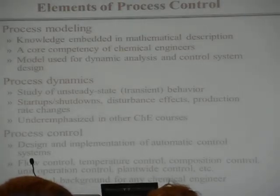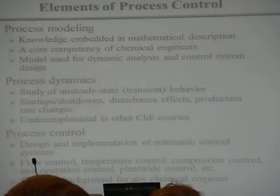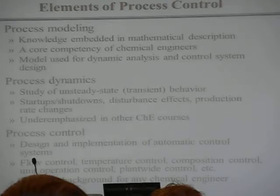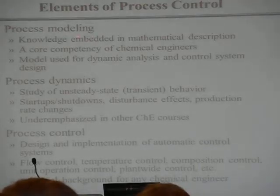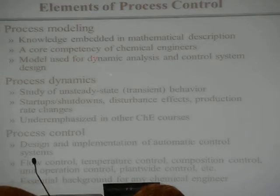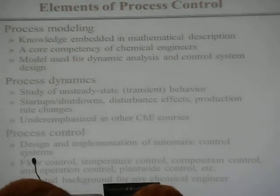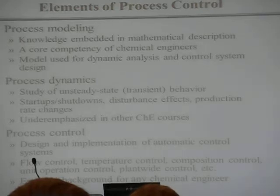There are three main elements of the course related to process control, two of which were touched upon significantly in 361. The first is process modeling: given a system of interest — a flow system, a reactor, a distillation column — you have to be able to write the governing equations. In industry, a model of a process is considered intellectual property, embedding years of operating knowledge, experiments, and pilot plant data. Modeling a real manufacturing process is quite complex and requires a lot of time and energy.